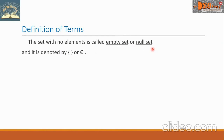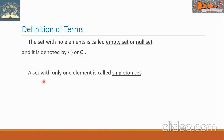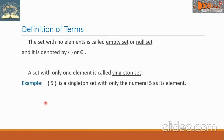Let us define more terms. The set with no elements is called an empty set or null set, and this is denoted by the empty set symbol or a zero with a slash. A set with only one element is called a singleton set. For example, the set here is a singleton set with only the numeral 5 as its element.